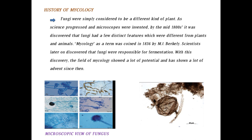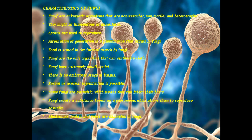This picture shows a macroscopic view of fungus. Regarding the structure of fungus and characteristics of fungi: fungi are eukaryotic organisms that are non-vascular, non-motile, and heterotrophic. They may be filamentous or unicellular. Spores are used to reproduce. Alternation of generations is a phenomenon that occurs in fungi. Food is stored in the form of starch. Fungi have an extremely small nucleus, there is no embryonic stage, and both sexual and asexual reproduction is possible. Some fungi are parasitic, meaning they can infect a host. Examples include mushrooms, mold, and yeast.